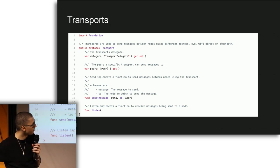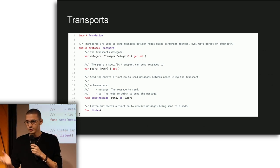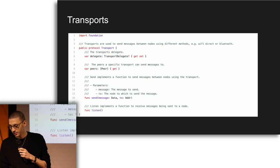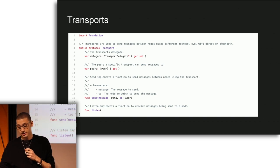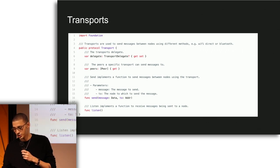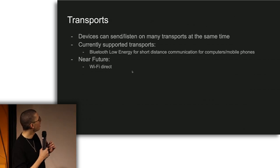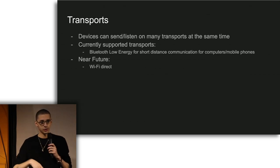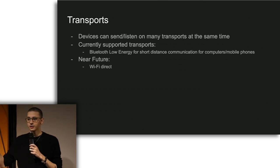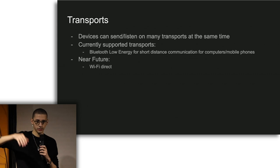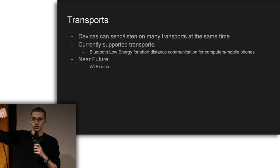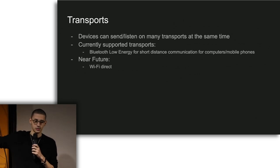This is a code example from our workshop at DevCon where we were teaching people how to implement their own transports. Everything is pretty simple — the only thing a developer is exposed to is a send and a listen function where they send some arbitrary message to some address, and the listen function just receives messages sent to that specific device. Devices can also send and listen on multiple transports at the same time, so a message can hop through an intermediate node to bridge different transports.